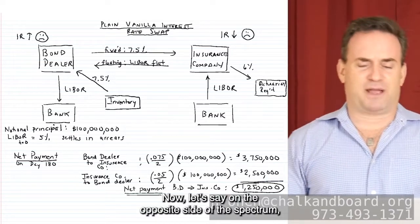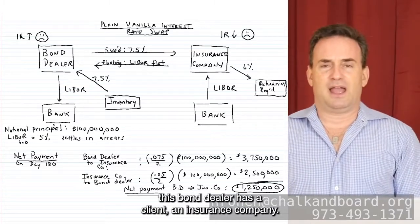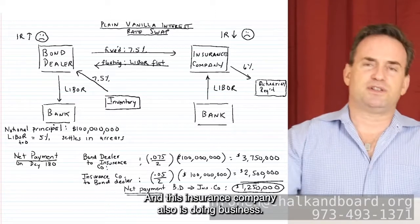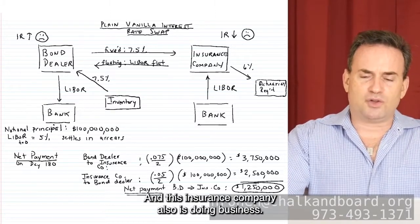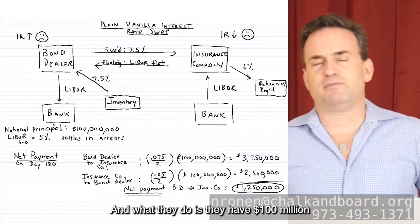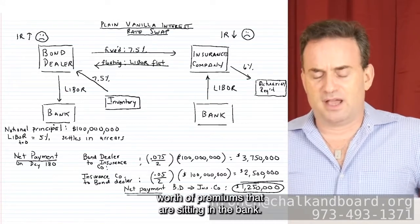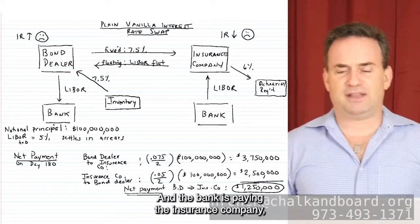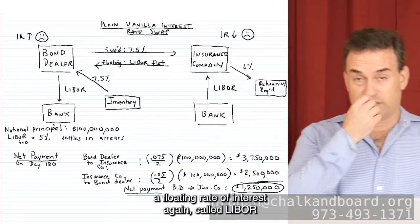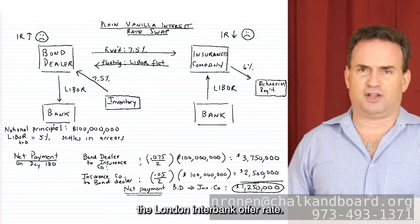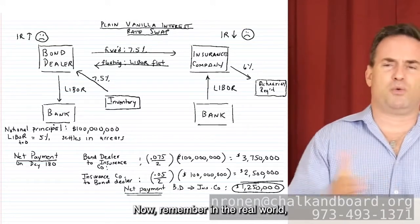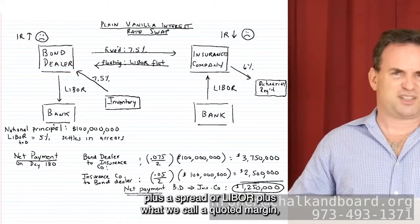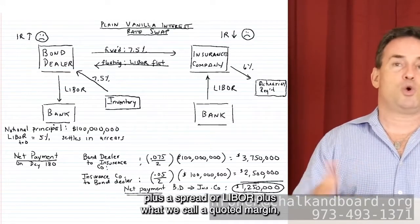On the opposite side of the spectrum, this bond dealer has a client — an insurance company. This insurance company has $100 million worth of premiums sitting in the bank, and the bank is paying the insurance company a floating rate — LIBOR. Now, in the real world you would never get just LIBOR; it would be LIBOR plus a spread, also called a quoted margin.